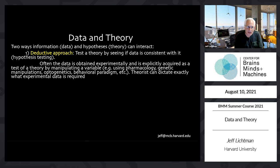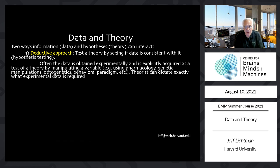They don't just get any old data. They often get data that manipulates a variable related to their theory, with an expectation that if they manipulate a variable one way or another, they will change a result. They can manipulate a variable like using a pharmacological agent that might block a neurotransmitter, or using a line of animals where a particular gene is knocked out, or a particular type of cell is made inactive, or they use something to manipulate activity. Optogenetics is a very popular tool for testing hypotheses. Or they put the animal in an unusual behavioral paradigm which, based on their expectation of the theory, they think the animal will behave in a particular way. In this sense, the theorist can dictate exactly what experimental data is required to test the hypothesis.